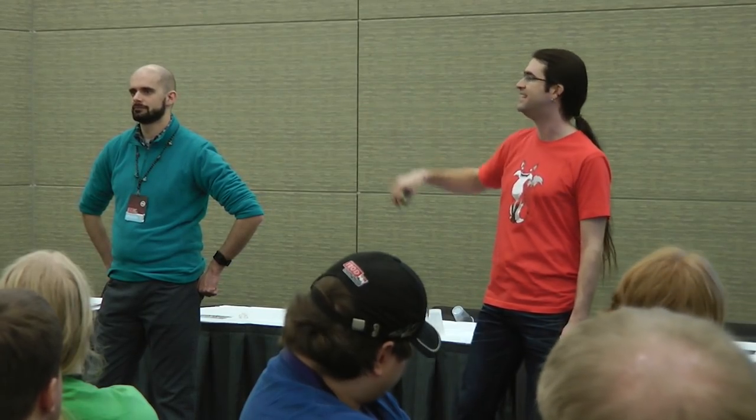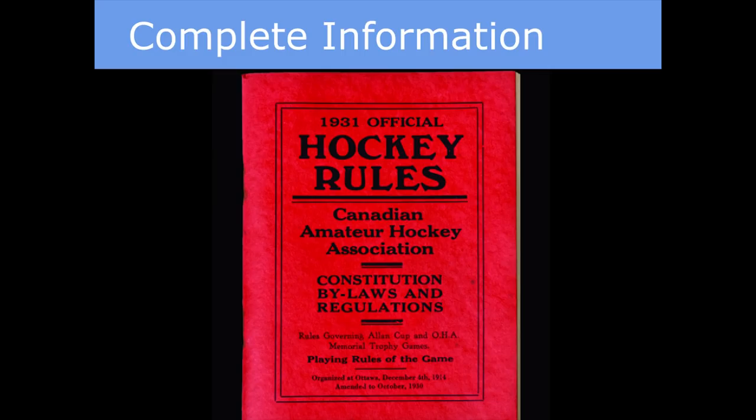Perfect information games cannot have simultaneous turns — by definition, if we act simultaneously, I acted without knowing what he did. Perfect information games are completely distinct from complete information games. A complete information game is where you know all the rules, the payoff matrix, all the possible strategies. Chess is also complete information — you can enumerate every move he could possibly make. But in Magic: The Gathering, if he has a hand of cards you don't know about, you don't know what he could do on his next turn — that's incomplete information.